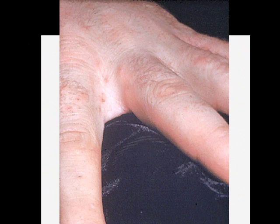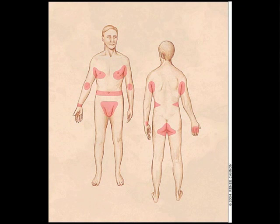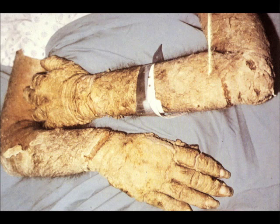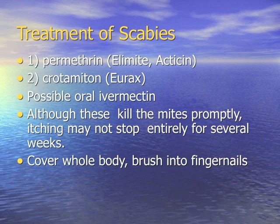Scabies — Sarcoptes scabiei — likes to appear at the wrist, axilla, and antecubital fossa. Immunosuppressed patients can develop Norwegian or crusted scabies with billions of organisms that spread readily. Treatment is permethrin or crotamiton; oral ivermectin kills them promptly, though itching may persist for weeks. Apply permethrin over the whole body, brushing it into the fingernails.